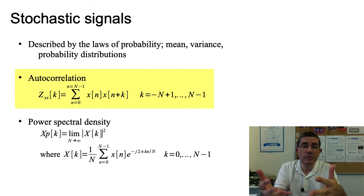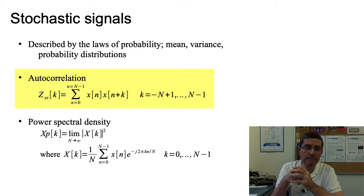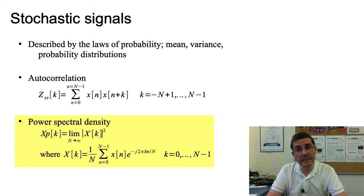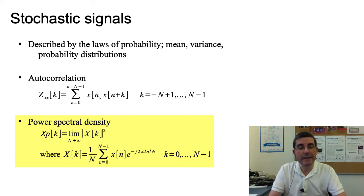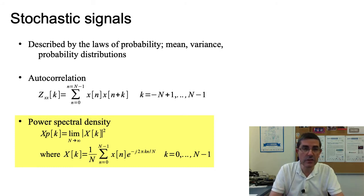The autocorrelation function can be used to measure how stochastic a signal is. If there are no repetitions, it is going to be close to a stochastic signal — the lower the autocorrelation value, the closer the signal is to a stochastic signal. Another mathematical function we can use is the power spectral density, which is basically the DFT taken to the limit: we take the squared absolute value of the DFT and take N, the size of the DFT, to infinity. If it converges to a function, that is our power spectral density.